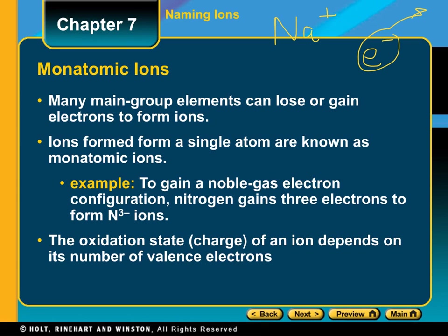Ions formed on a single atom are known as monatomic. If you think back to your biology prefixes, mono meaning one — so a monatomic ion means that it's one element forming a charge.